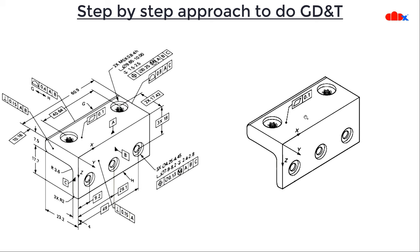Once you decide this surface to be completely flat, you add flatness. After that, you can consider that surface as datum A, because it is the surface sitting on the inspection table and is completely perfect. All dimensions will be referenced from this surface. Now datum A is decided. You can go with a single datum or multiple datums as per your requirement. In this case I'm going with multiple datums, so the next step is to decide datum B and datum C — primary, secondary, and tertiary datums.